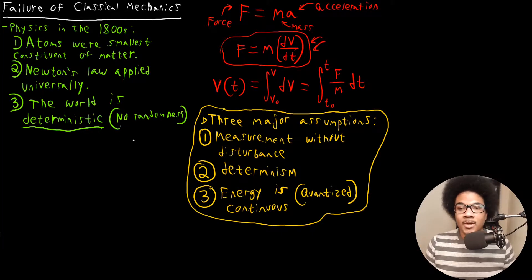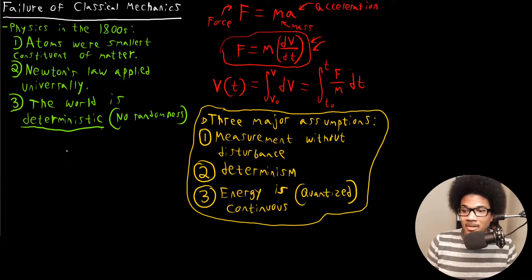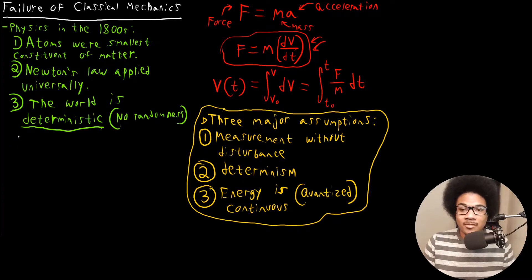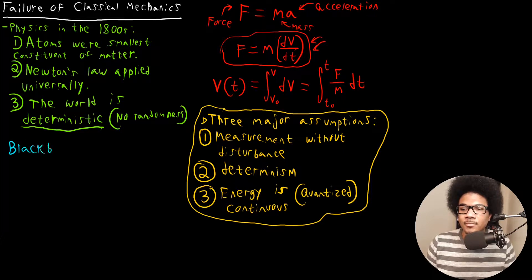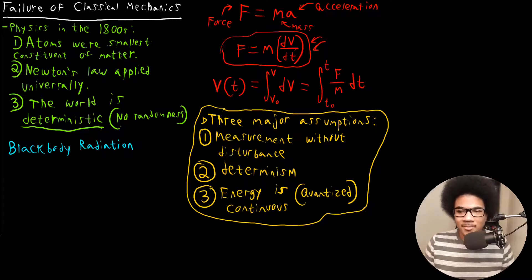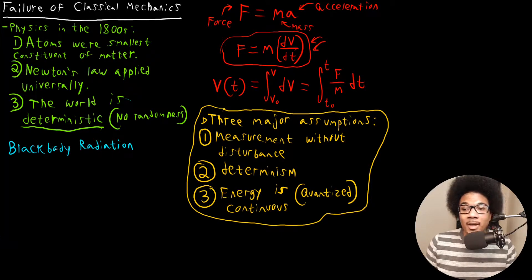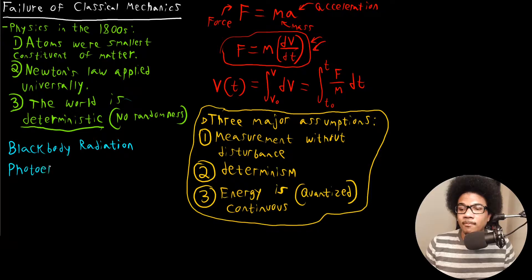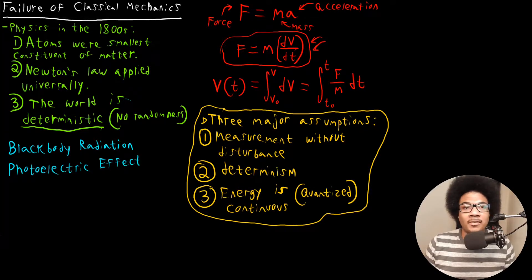So we're going to look at some specific failures of classical mechanics, a few experiments that couldn't be explained by classical physics that we're going to investigate further. The first one is known as black body radiation. A black body is anything that radiates at every portion of the electromagnetic spectrum. Those objects, their spectrum was poorly described by classical physics. And only when we were able to use quantization of energy, were we able to explain the energy spectrum of a black body. So that's the first one. The photoelectric effect is another one.